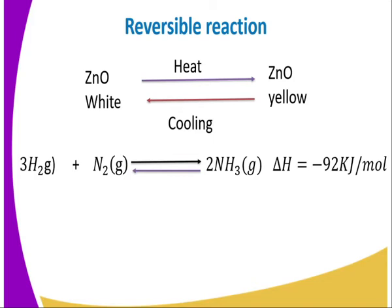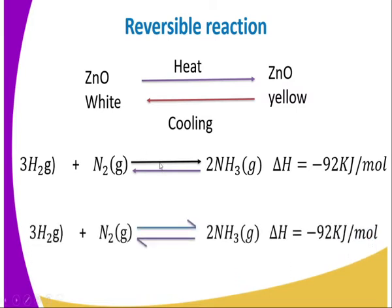The ΔH value, which is the symbol for enthalpy, is negative 92 kilojoules per mole — this tells us that the forward reaction is exothermic. For reactions involving a chemical change, some products are reversible, meaning ammonia gas can also decompose through thermal dissociation to give us nitrogen and hydrogen back. A reaction in which reactants form products and products form reactants is a reversible reaction. When the rate of the forward reaction equals the rate of the backward reaction, we represent this with the equilibrium arrows, showing the reaction can reach dynamic equilibrium.